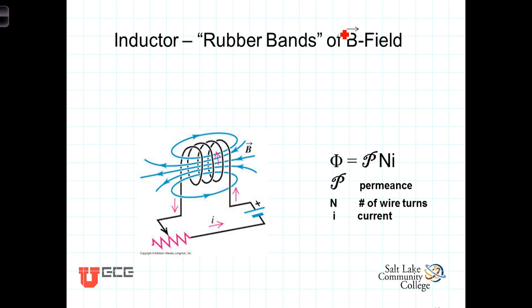Electric charge has an electric field that goes from one point charge to another, but the magnetic field is formed in loops. One way of visualizing these loops of magnetic field is to think of them as analogous to stretched rubber bands. As the magnetic field increases, it's like adding more stretched rubber bands or stretching the existing bands more. As the current increases, the magnetic field increases and we have more energy stored in those rubber bands.